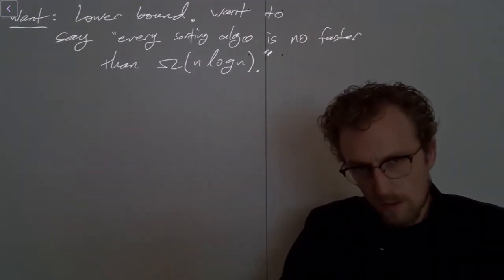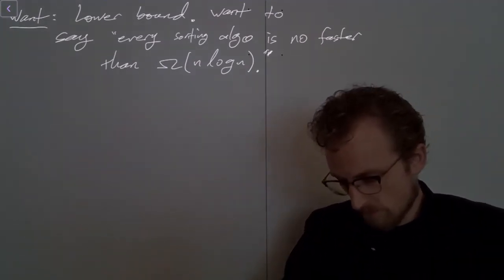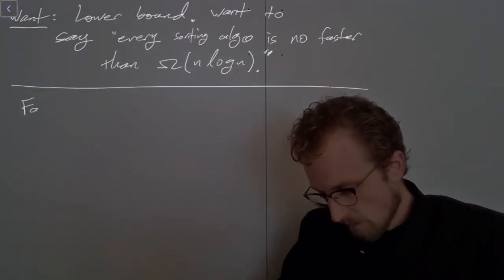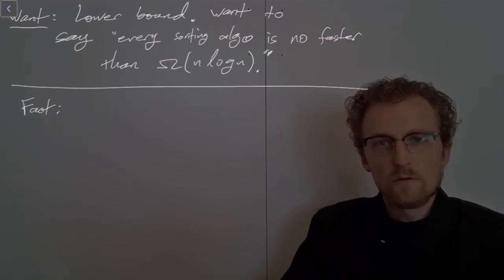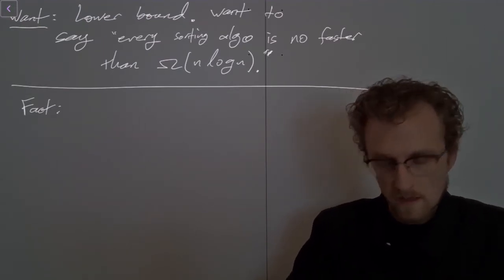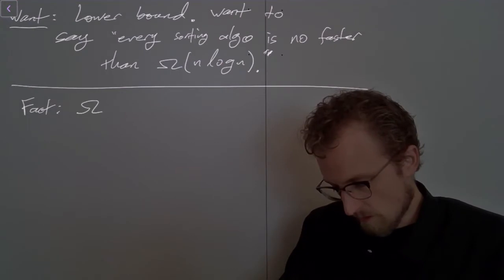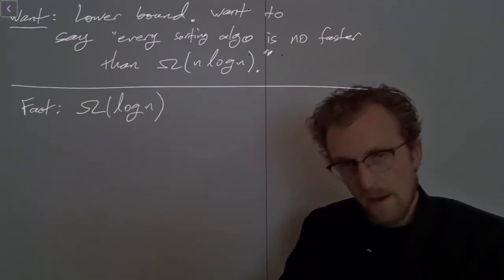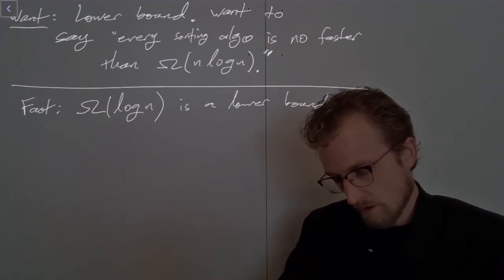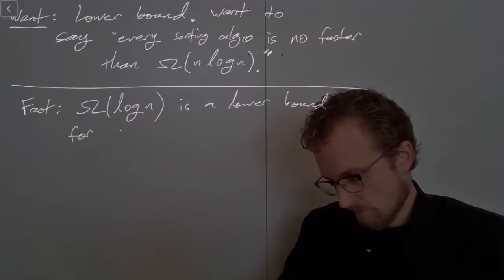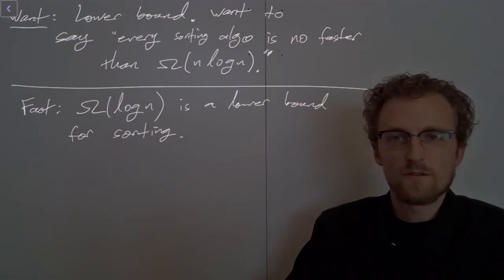There are some lower bounds that we can get quite easily. Here's a fact: every sorting algorithm is no faster than log n time. Big Omega of log n is a lower bound for the complexity of sorting.